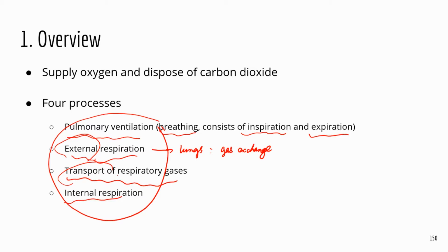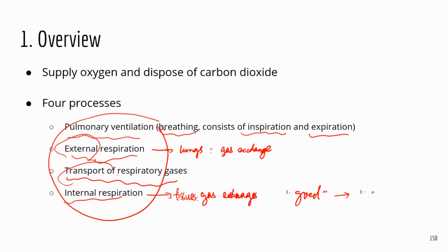The last step is internal respiration. Internal respiration is again gas exchange, but this time it happens at the tissues. The blood brings in oxygen, and the cells pick up that oxygen, but the cells also drop off carbon dioxide, which is picked up by the blood. After internal respiration, the good blood — the oxygenated blood — now becomes the bad blood, deoxygenated, very low in oxygen level.